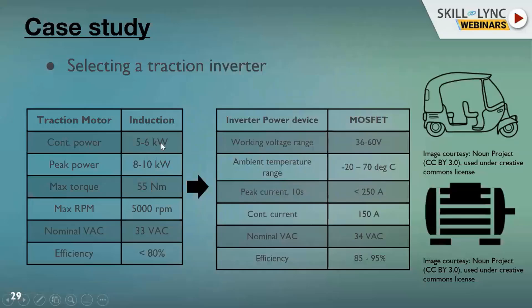As an example, the power requirements for a traction motor in a three-wheeler can reach five to six kilowatts, and peak power requirements can go up to ten kilowatts. It is very important to understand that the inverter should be well capable of supplying this power to the motor. The motor will also have torque and speed requirements that need to be converted into electrical quantities — torque is normally controlled by current, and speed is governed by voltage.